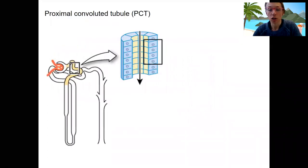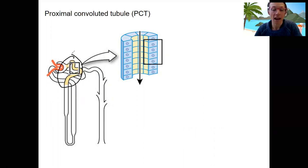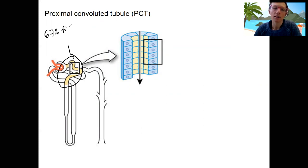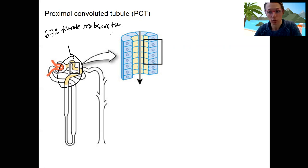In this video, we're going to talk about what happens in the proximal convoluted tubule, the PCT, which is the first region of the nephron after filtration has occurred. This is where about 67% of all our filtrate is reabsorbed, and almost 100% — so 99% or so — of the nutrients, such as glucose and amino acids. So a lot of reabsorption occurs, and we're also going to have a little bit of secretion.